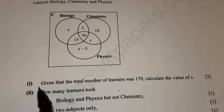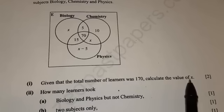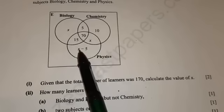The first question says, given that the total number of learners was 170, calculate the value of x. So they want you to find the value of x.